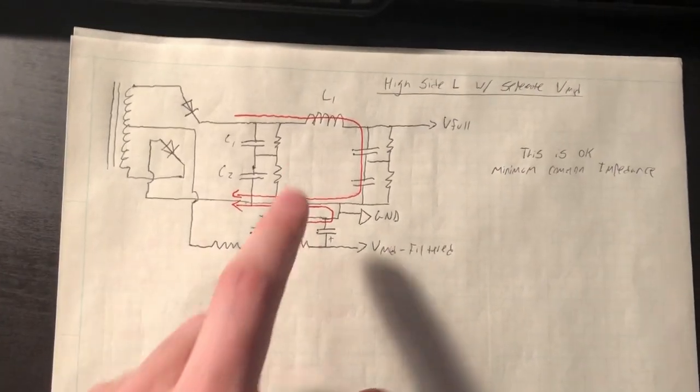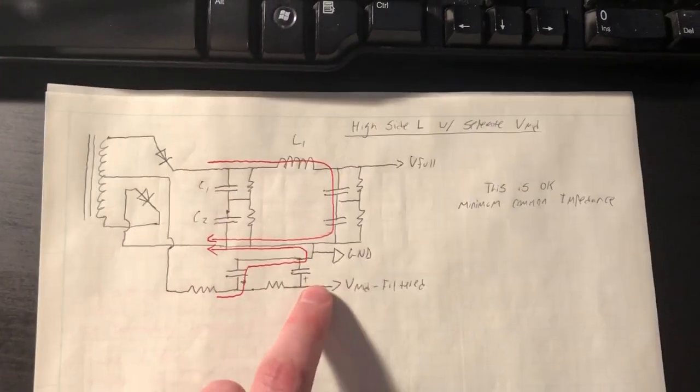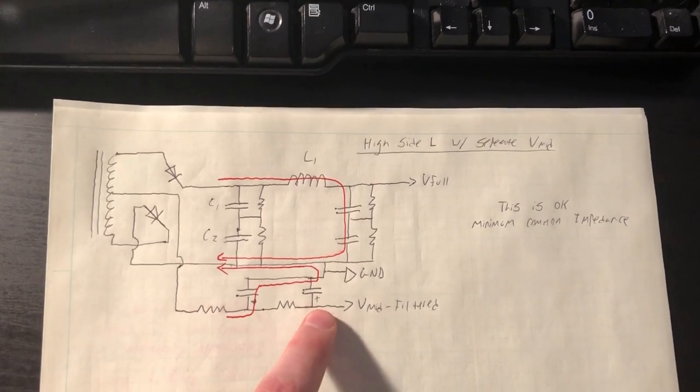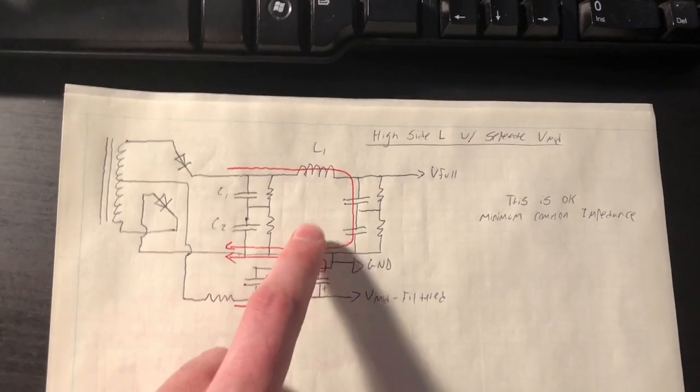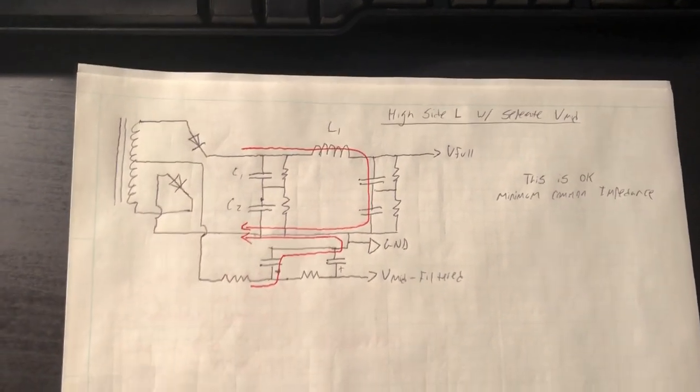However, as I mentioned before, I do not want to put a filter choke on the high side. So this arrangement for my requirements will not work either. If I was doing a lower voltage supply, I might try this. But for 1000 volts or over 1000 volts, I think this arrangement is out.